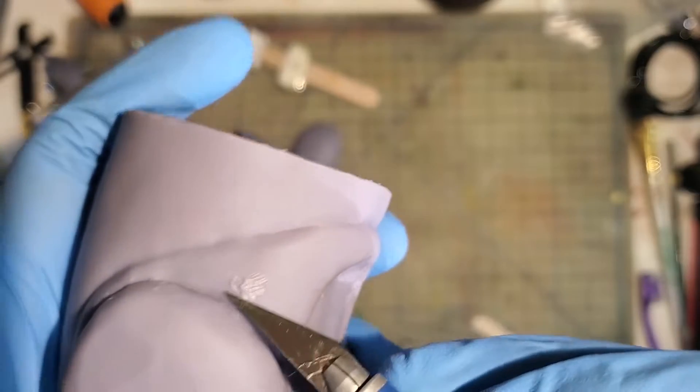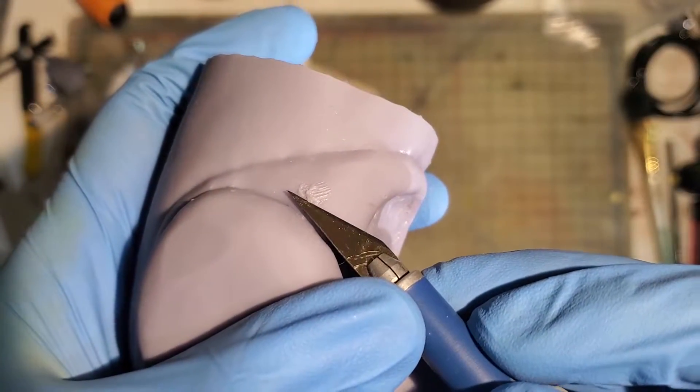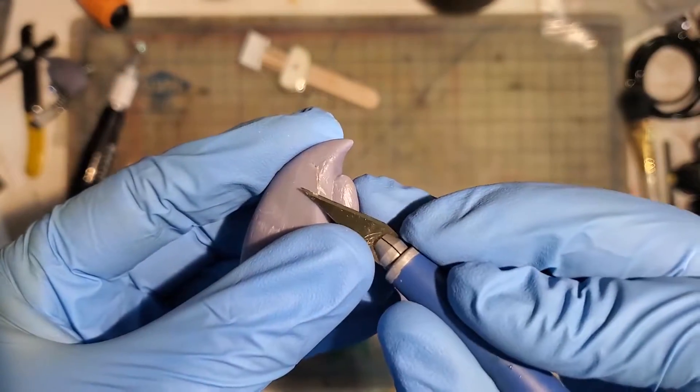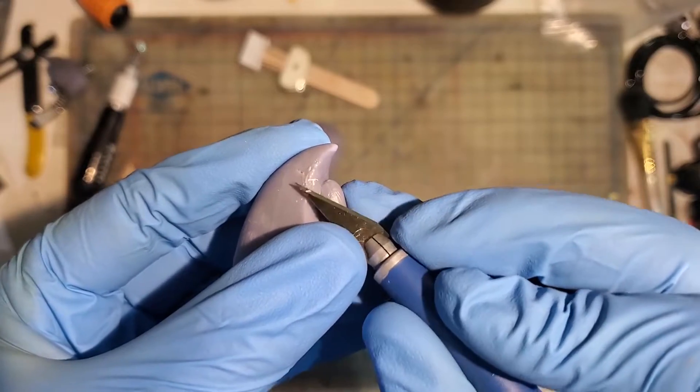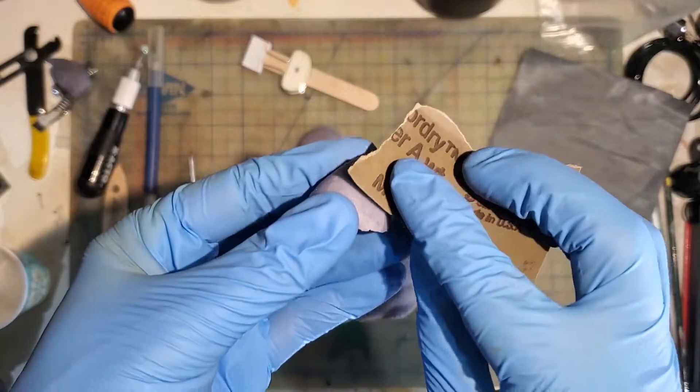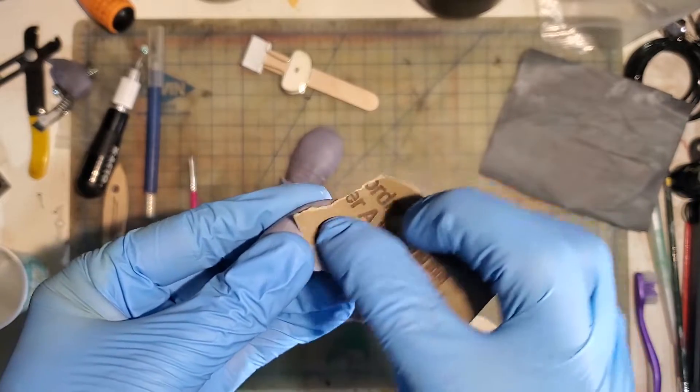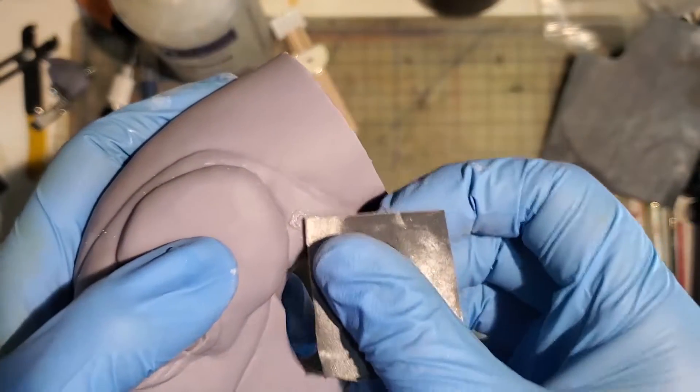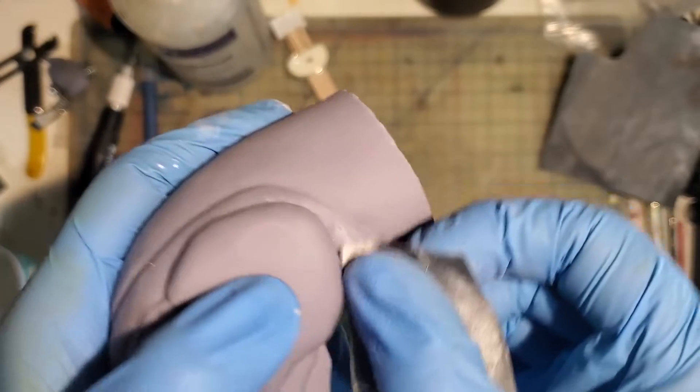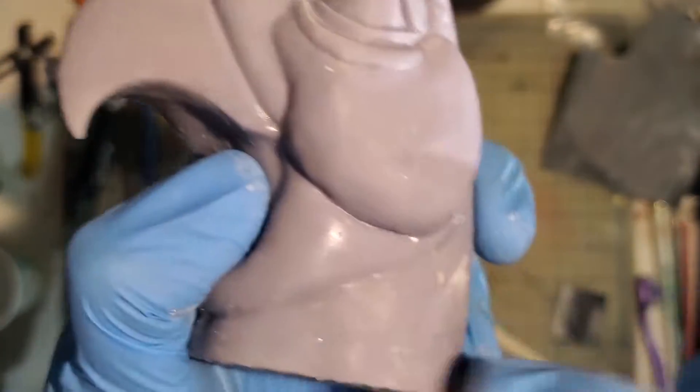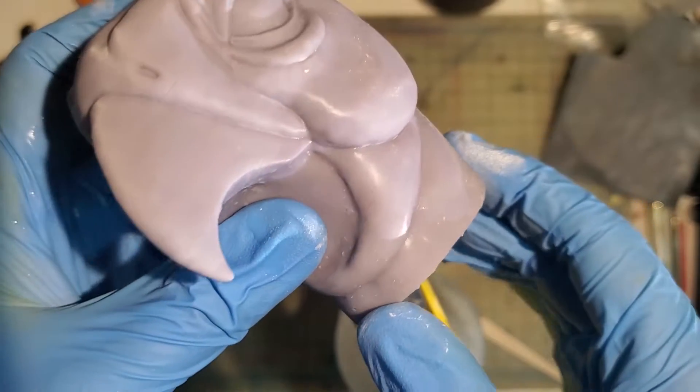You can remove any excess resin patch with an exacto blade. Just be careful not to add any additional damage. If the area is large enough, you could also use sandpaper. Just be sure to finish your sanding with a high grit like 600. It also helps to add a little water when sanding for an extra smooth finish.